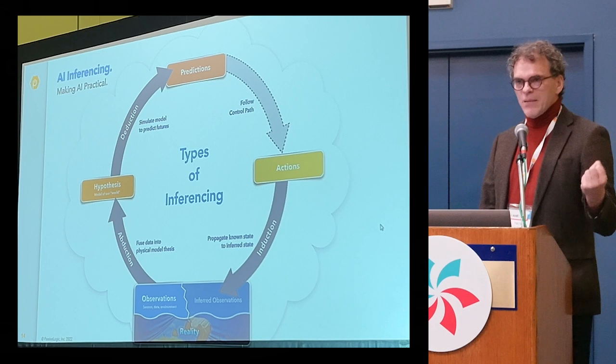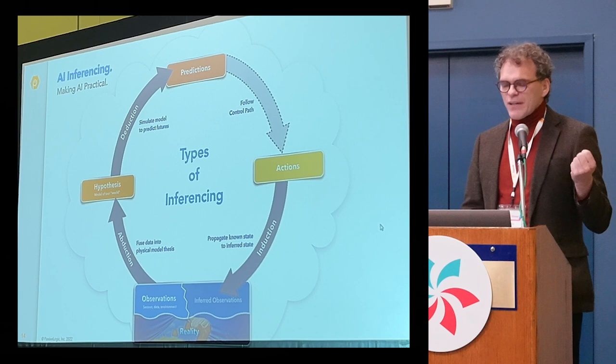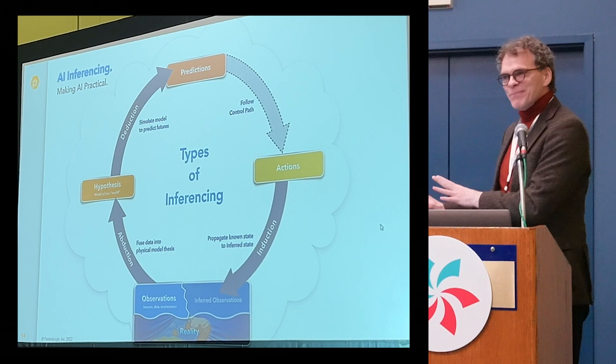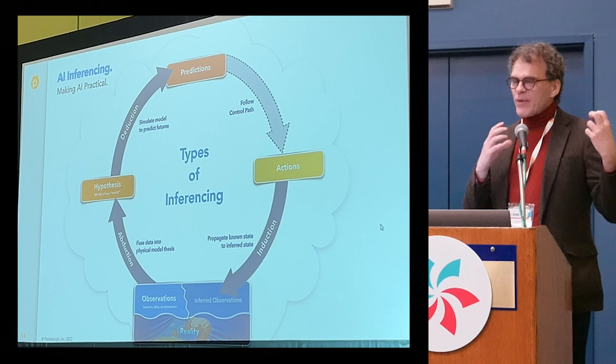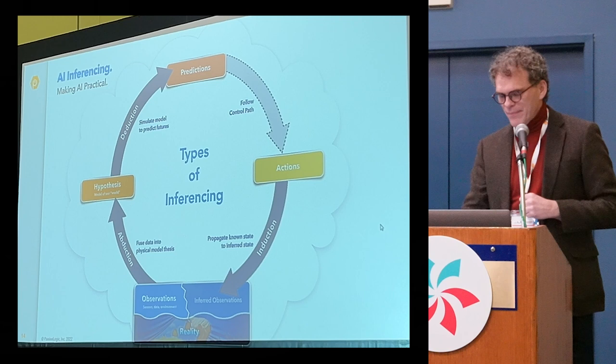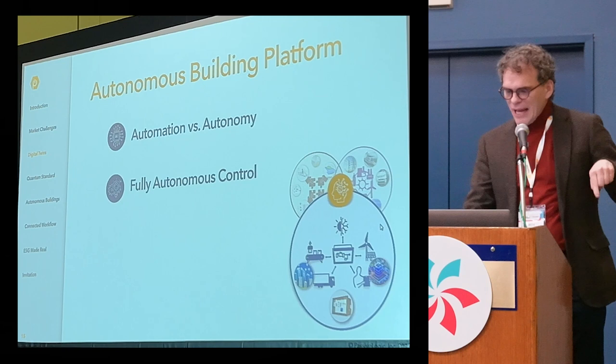We have three kinds of inferences we're interested in. Inferencing is the AI term for running something — it sounds fancy, but it just means running. There are three concepts: deduction, abduction, and induction. Here they're formulated in the scientific method — how do you come up with a hypothesis, how do you predict, how do you make actions, and then how do you apply that back to reality? That's AI, that center point. Let's apply it to what we have to accomplish in buildings.